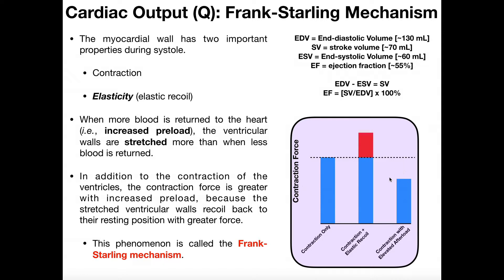Afterload and preload were also discussed in the previous video. Afterload is bad; preload is good. With any kind of afterload — resistance the heart has to pump against — the heart cannot generate as much force because it's pumping against higher pressure, such as high blood pressure in the arteries, or aortic stenosis, which is hardening of the aorta where it has lost compliance. You don't want afterload, but preload is good. The Frank-Starling mechanism is applicable anytime you have increased blood returned to the heart — the major examples being exercise and fight-or-flight.